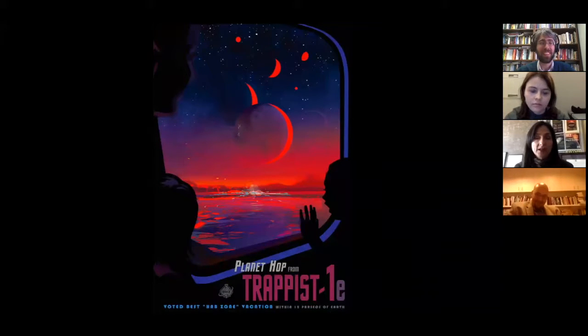And finally, my last slide in my last poster. This is a little less humorous, but really Planet Hop from TRAPPIST-1e. And they're imagining that in this new system that was announced last week, where there are seven planets, they're just imagining that, look, there's this child looking out this window, and you're just cruising by taking a look at the other worlds. It says at the bottom, voted best HAB zone vacation within 12 parsecs of Earth.